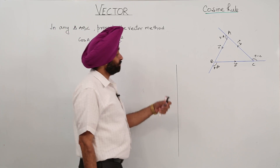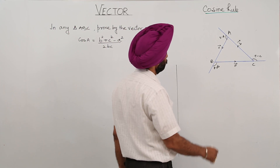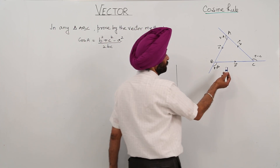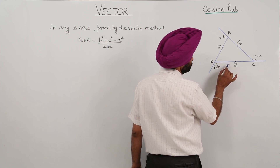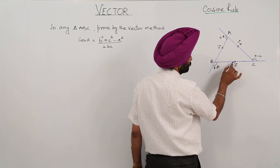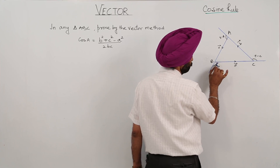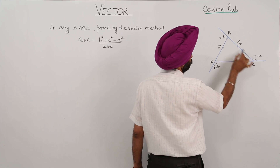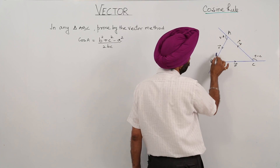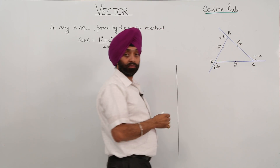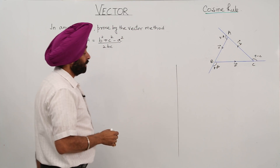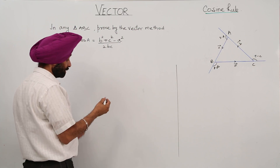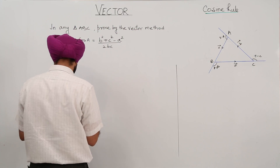Now this is the figure we have made. Check the directions: vector BC to this side, vector CA to this side, and vector AB to this side, and the angles now.